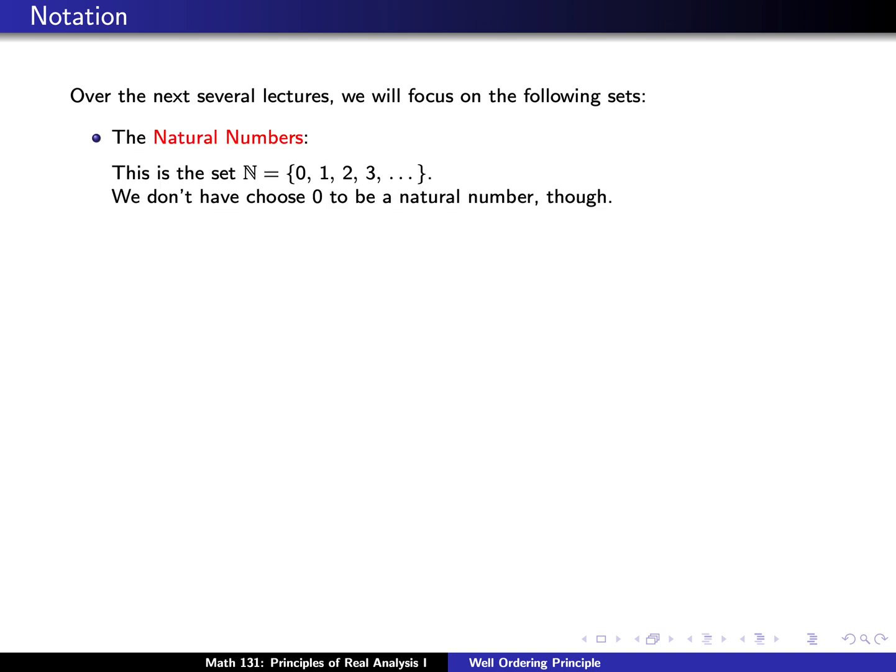First we have the natural numbers. We can think of this as the collection of whole numbers, that is integers 0, 1, 2, 3, and so forth. However, we don't have to choose 0 to be a natural number. In fact, throughout this course we will not have 0 to be a natural number.